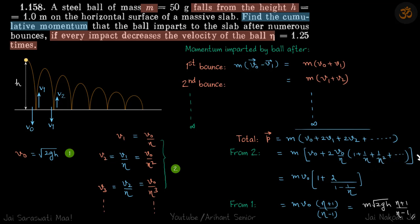If we take v0 out we get this, and we could do this because 1 by eta is less than 1. For an infinite series its sum is finite and it's given by 1 upon 1 minus this factor which is 1 by eta. We just solve this and put the value of v0 and get our answer.